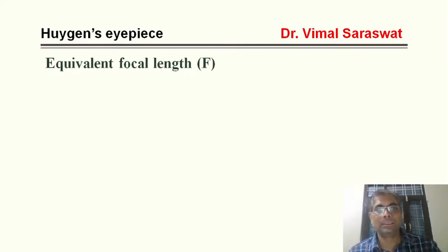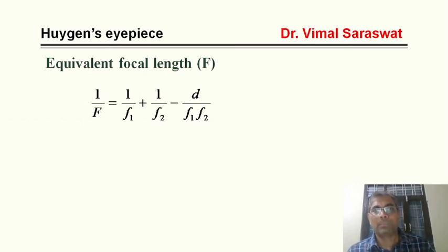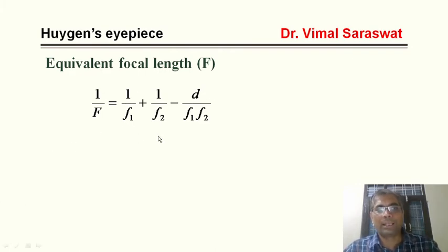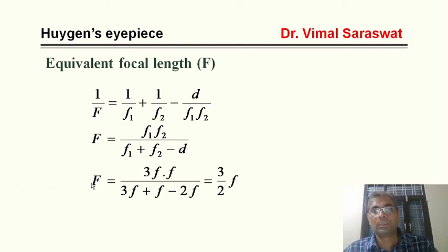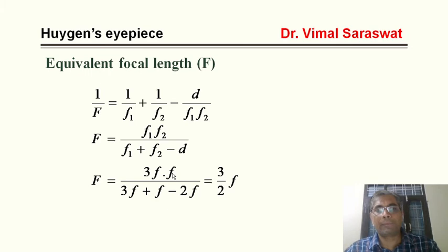Now, equivalent focal length. If two lenses are placed at a distance d, with focal lengths F1 and F2, then the equivalent focal length is given by: 1/F = 1/F1 + 1/F2 − d/(F1·F2). With F1 = 3f, F2 = f, and d = 2f, this gives F = 3f²/(2f) = 3f/2. So the equivalent focal length of Huygens' eyepiece is 3f/2.